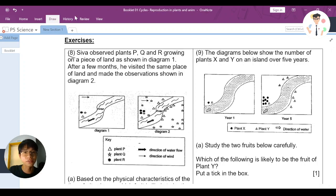So here, say that Siva observed plants P, Q, and R growing on a piece of land as shown in diagram 1. After a few months, he revisited the same place on land and made the observation shown in diagram 2. So as you can see this diagram 1 at first, then diagram 2 after a few months. Now we need to try to, based on these diagrams, figure out something here.